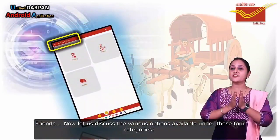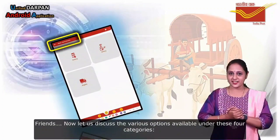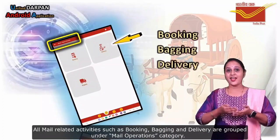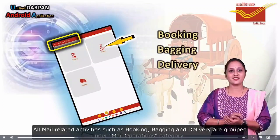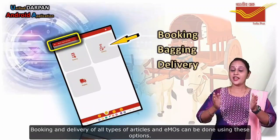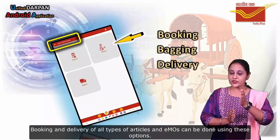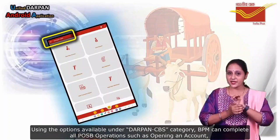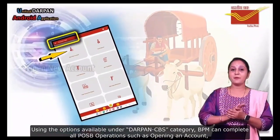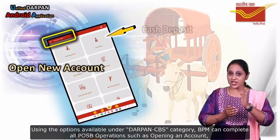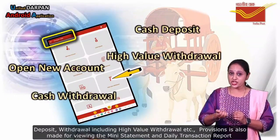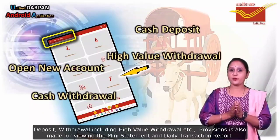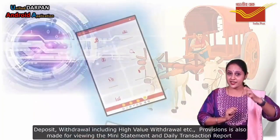All mail-related activities such as Booking, Bagging, and Delivery are grouped under the Main Operations category. Booking and delivery of all types of articles and EMOs can be done using this option. Using the options available under the CBS category, the BPM can complete all POSB operations such as opening an account, Deposit, Withdrawal, including High Value Withdrawal. Provision is also made for viewing the Mini Statement and Daily Transaction Report.